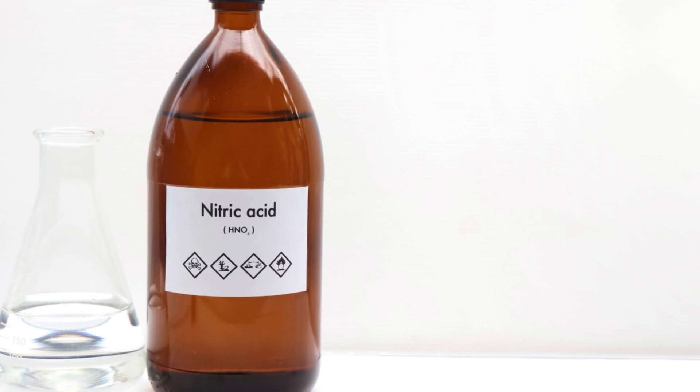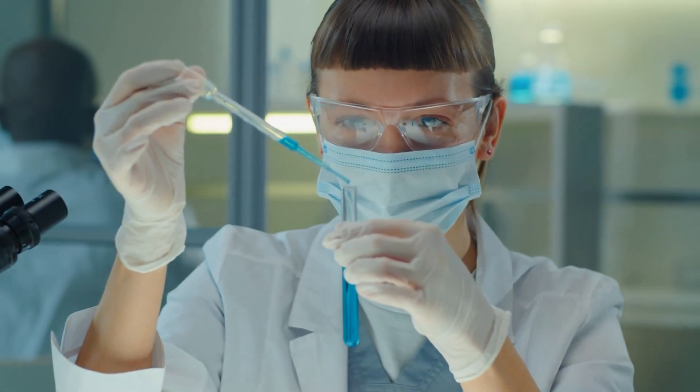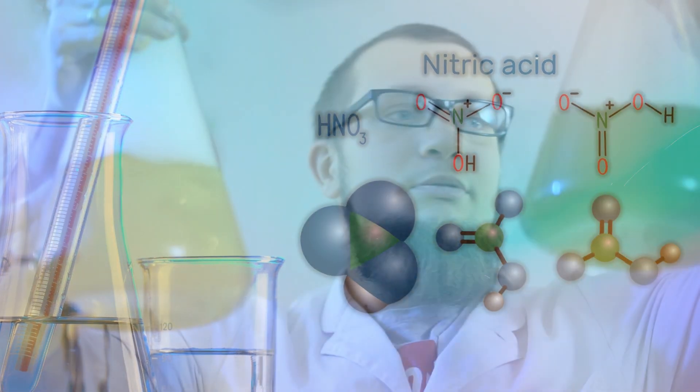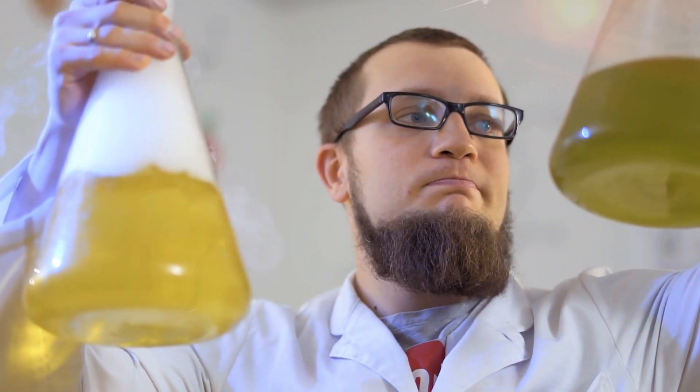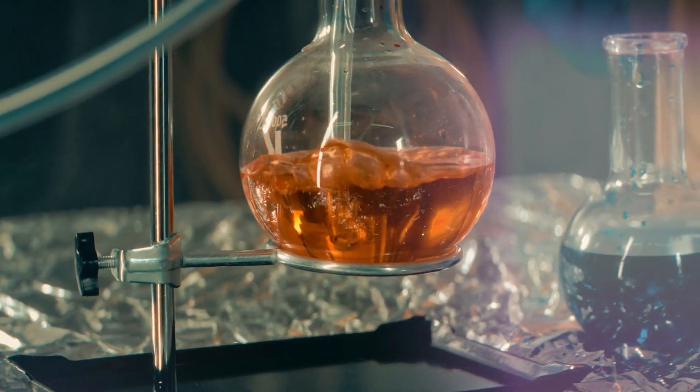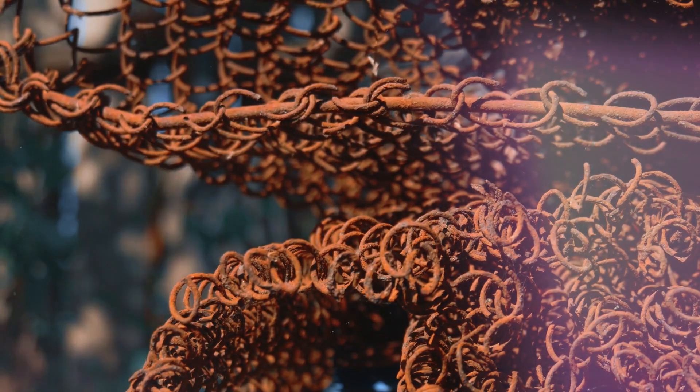Now let's discuss nitric acid (HNO3), a powerful oxidizing agent. It reacts with steel to form iron nitrate and water. Although the reaction is relatively slow compared to other acids, it can gradually weaken the steel over time.